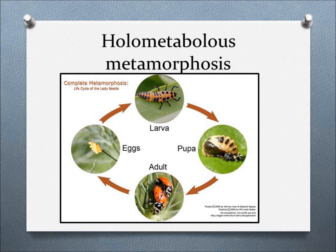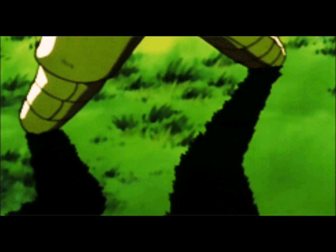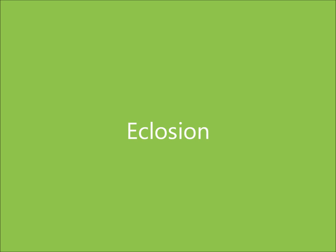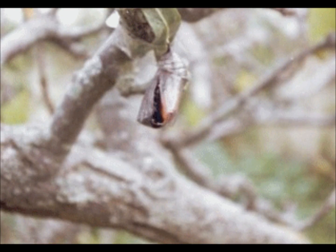The most common known life cycle is the complete metamorphosis: egg, larva, pupa, and adult. The larva hatches from the egg and it continues to go through instars until it becomes rather big. When it is big enough, it develops a final molt and becomes a pupa. Or, the last larval skin may harden into a puparium. Pupae do not eat, and although some can wiggle, most do not move and just wait for the next stage of life. When the adult emerges from its pupa stage, this is called eclosion.